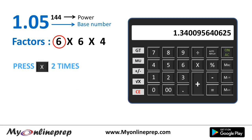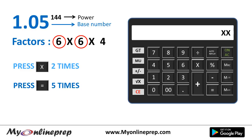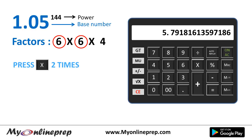The operation with the first factor is done. After finishing each factor operation, we press the multiply button 2 times. Press multiply: 1 and 2. The next factor is also 6, so we press the equals button 5 times again: 1, 2, 3, 4, 5. The operation with the second factor is done, so press multiply 2 times: 1 and 2.